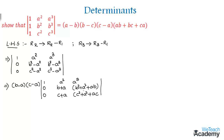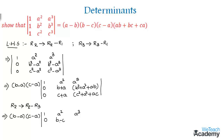Now let us apply the operation R2 minus R3 to the second row. This gives us the factor (B minus A) into (C minus A) outside the determinant. The first row remains 1, A squared, A cubed. In the second row we get 0, then (B plus A) minus (C plus A) which gives B minus C, and then (B squared minus C squared) plus (AB minus CA).